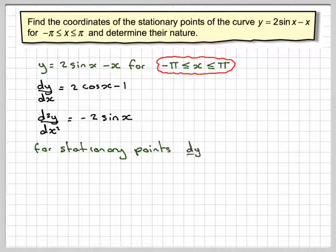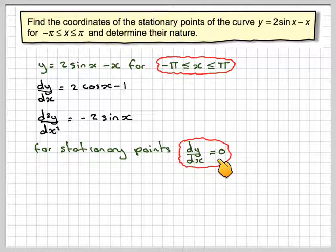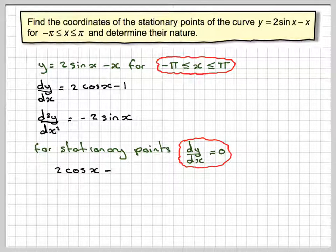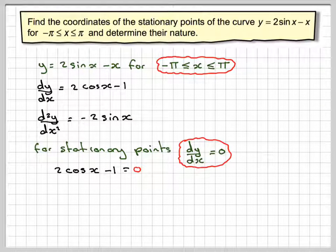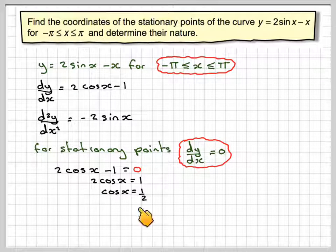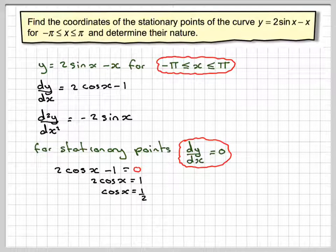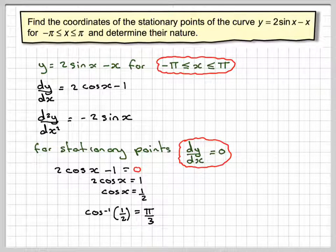For finding stationary points, we need to find where the gradient is equal to 0, so we put dy/dx equal to 0. Setting 2 cos x minus 1 equal to 0, we get 2 cos x equals 1, so cos x equals one half. To solve that, we do cos inverse of one half, and we need to know that's pi over 3.